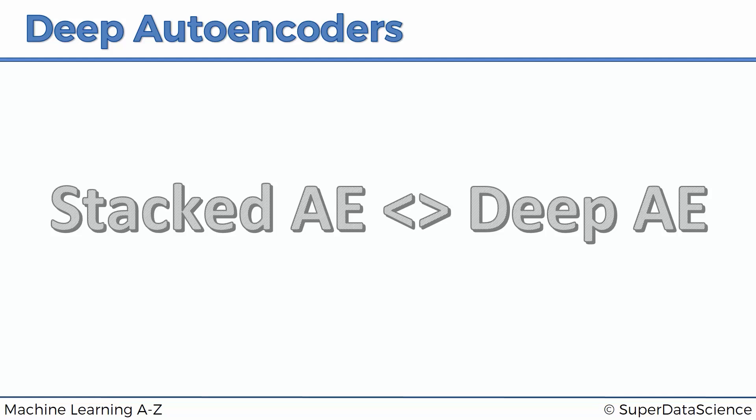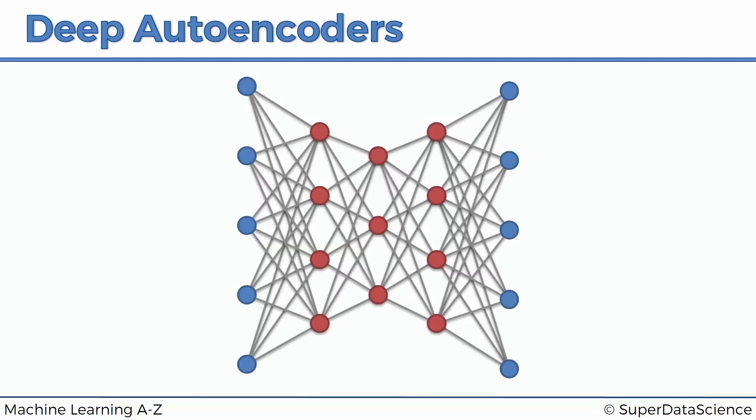Are you ready for it? And here we go. This is a deep autoencoder. And right away, just based on the colors and the way we've structured this course, you can tell that this is a blast from the past. These are restricted Boltzmann machines.